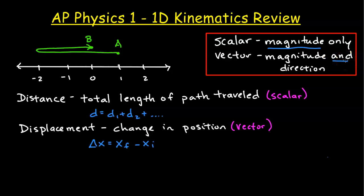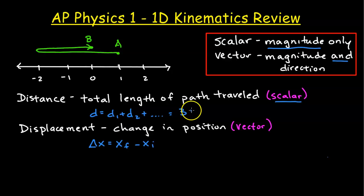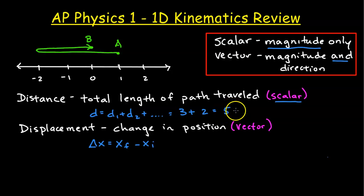An example of this would be distance and displacement. Distance is an example of a scalar quantity — it is just an amount. Distance, specifically, is the total length of the path traveled. So if we're traveling from location A to location B, we go to the left three spaces and then to the right two spaces. Three plus two is five, and if we're measuring in meters, this would be five meters.